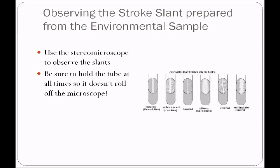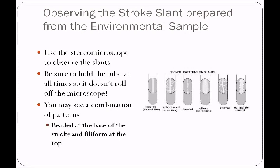Arborescent is tree-like — Arbor Day is the day we plant trees, so arborescent is tree-like. Beaded is self-explanatory. Effuse means spreading and thin. Rhizoid is like roots. Echinulate is spiny — echin rhymes with spine, so echinulate looks like a spine. You may see a combination of patterns; for example, you might find it beaded at the base of the stroke and filiform at the top.